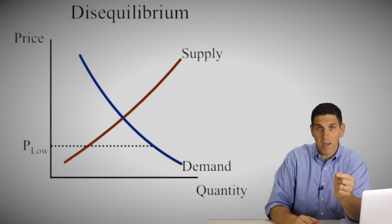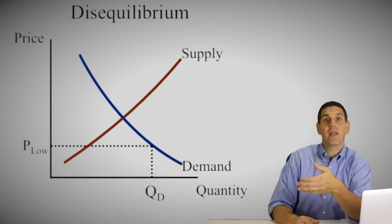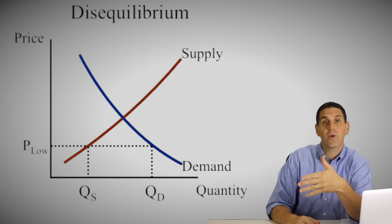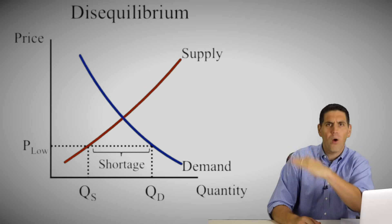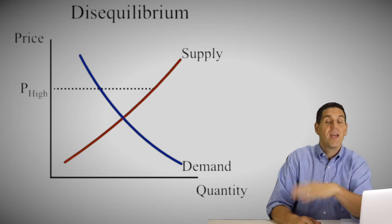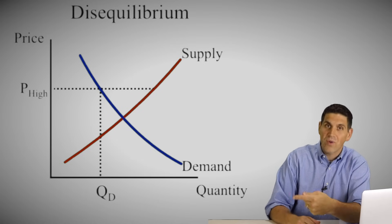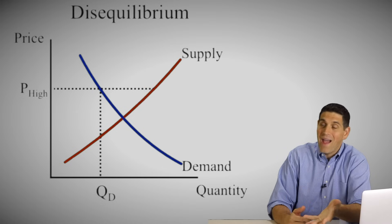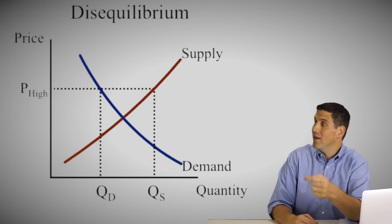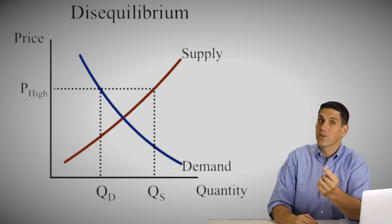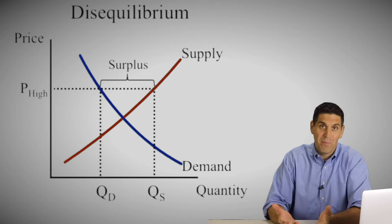If the market is at disequilibrium — for example, if the price is too low — then the quantity demanded would increase, the quantity supplied would decrease, and there'd be a shortage. Remember, shortages occur when the price is low. If the price is really high above equilibrium, then the quantity demanded falls — people don't really want to buy it — the quantity supplied would increase. We're at disequilibrium and there's a surplus, meaning more units are being produced than people want to actually buy.